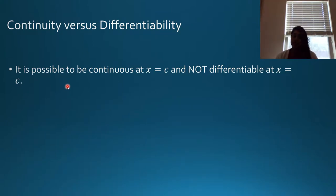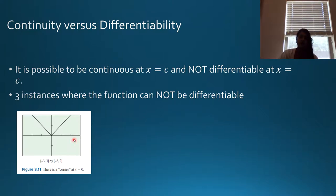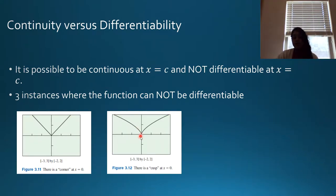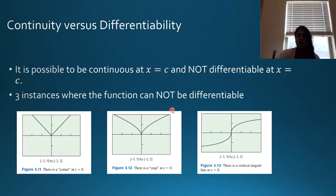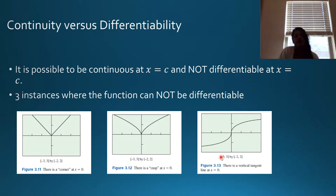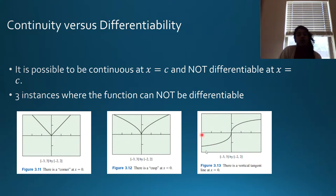It is possible to test for continuity, find that a function is continuous, but find it is not differentiable. There are three instances we can see visually: a corner — where there's a sharp corner — cusps — where there's a rounded edge coming in — and finally the most missed one: a vertical tangent. On an AP question, you might recognize a corner and a cusp, but miss the vertical tangent. Make sure you highlight this one on your flashcards.